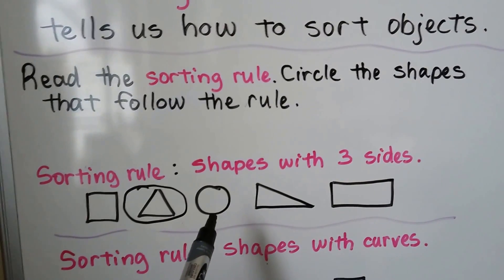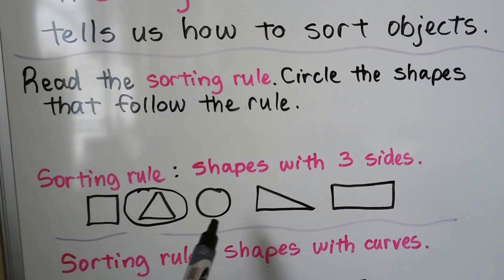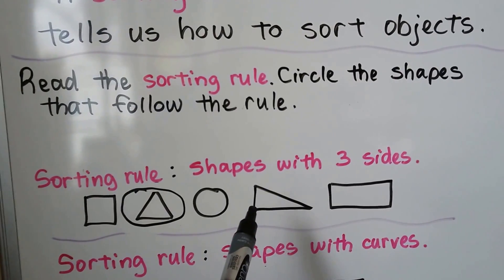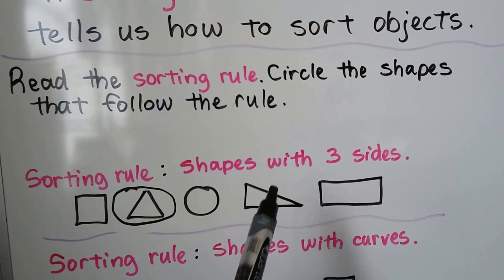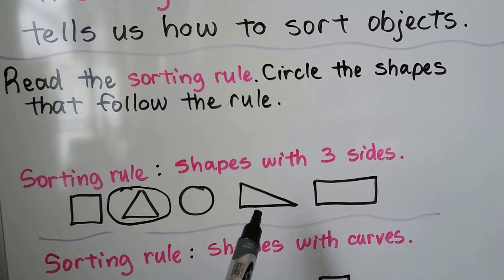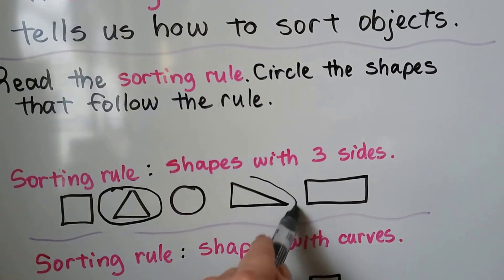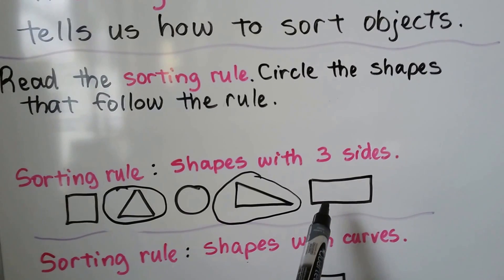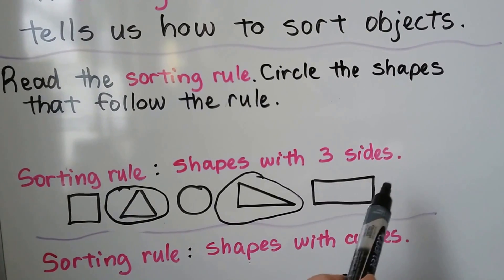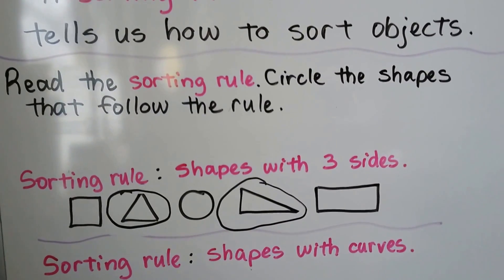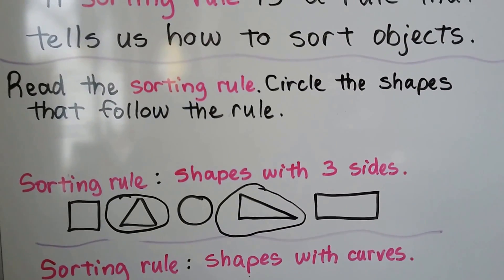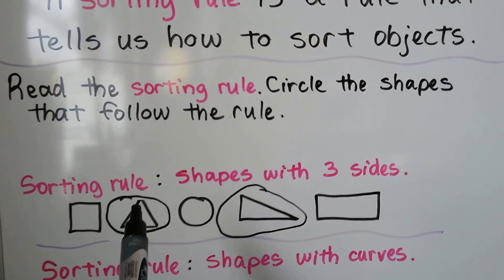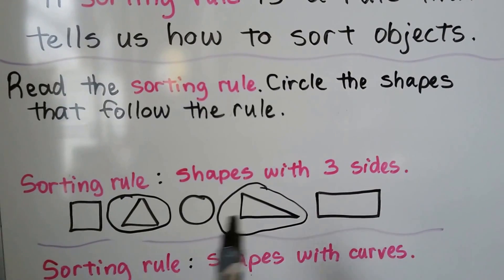Circles have no sides — it just has curves. Here we have another type of triangle; it's got one, two, three sides. Then we have a rectangle with one, two, three, four sides. So following the sorting rule, the shapes with three sides are the triangles.